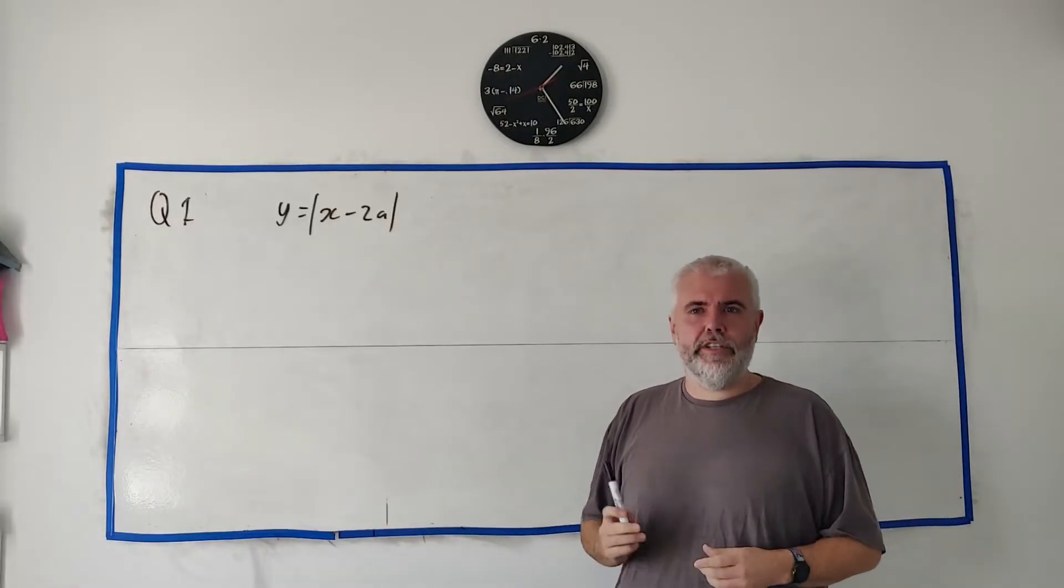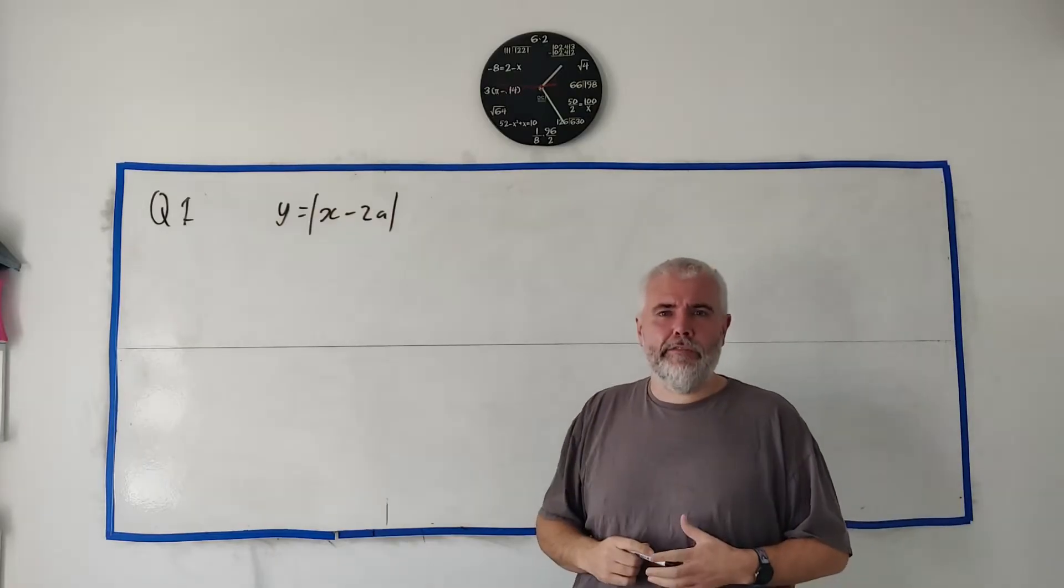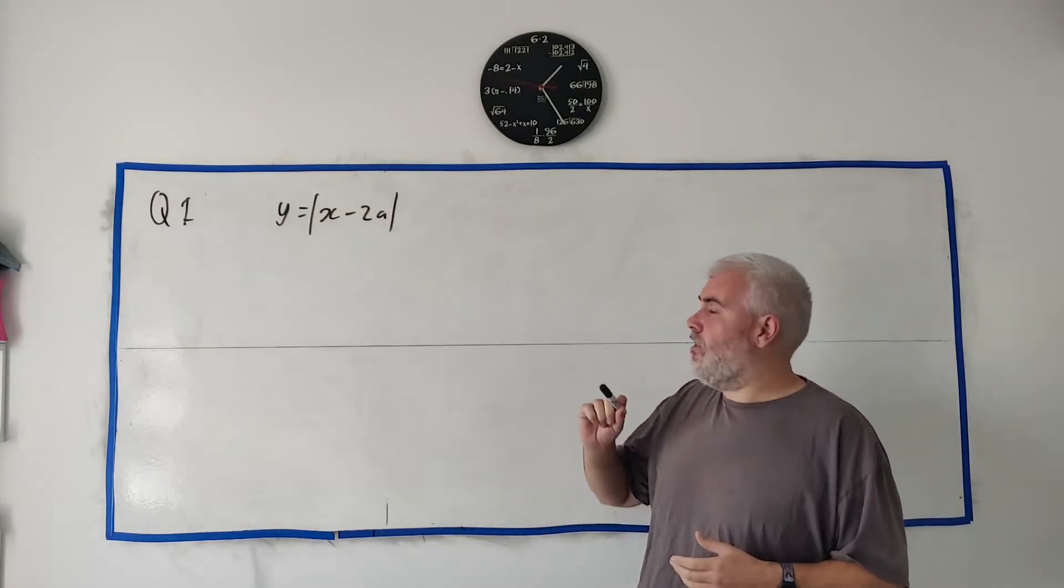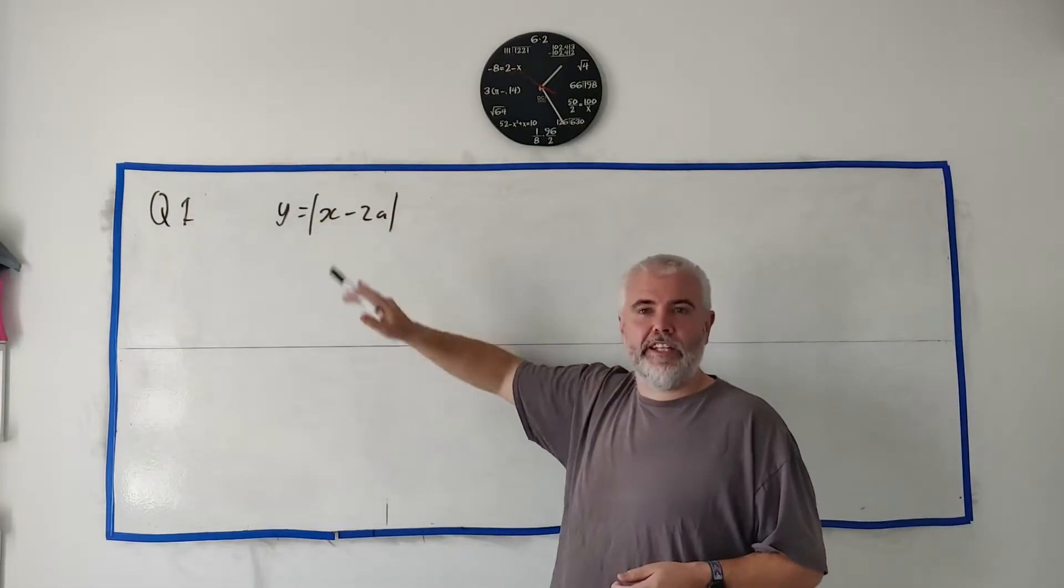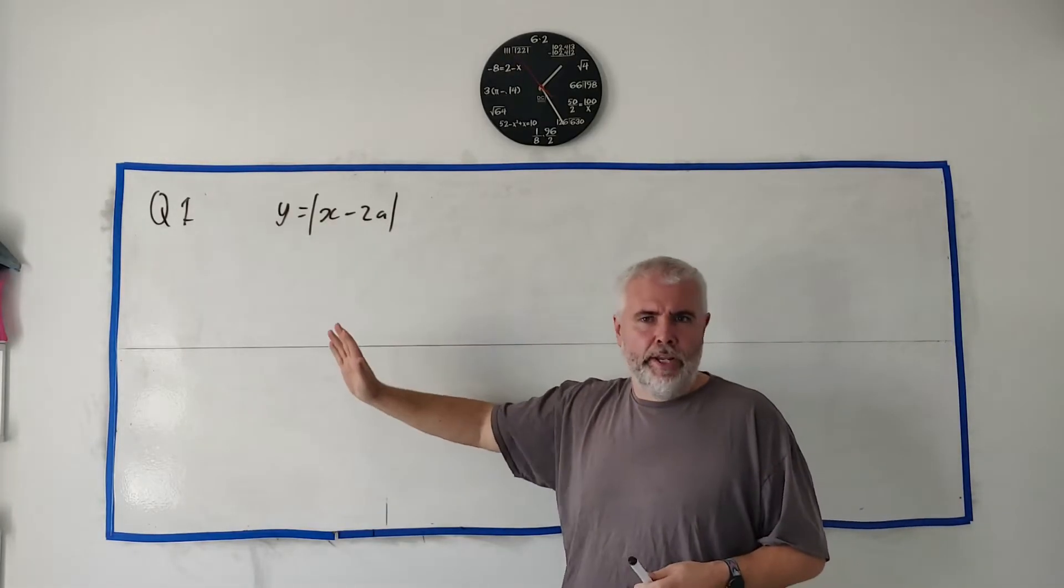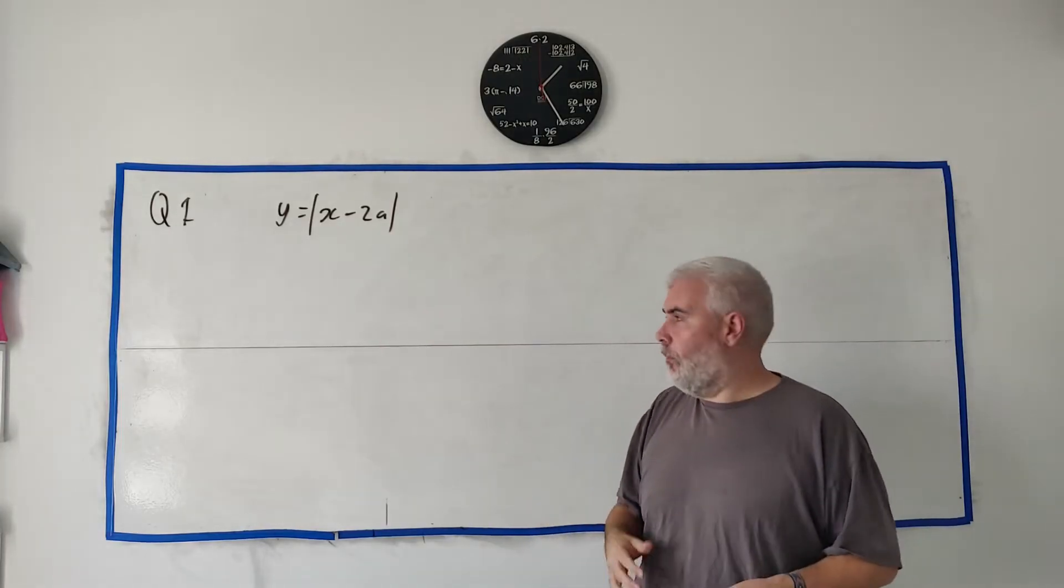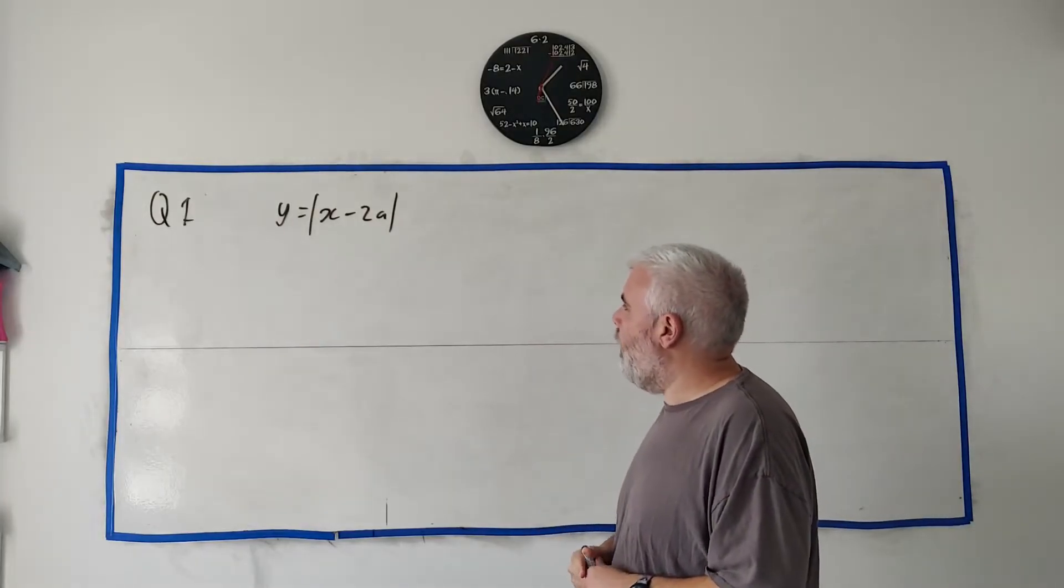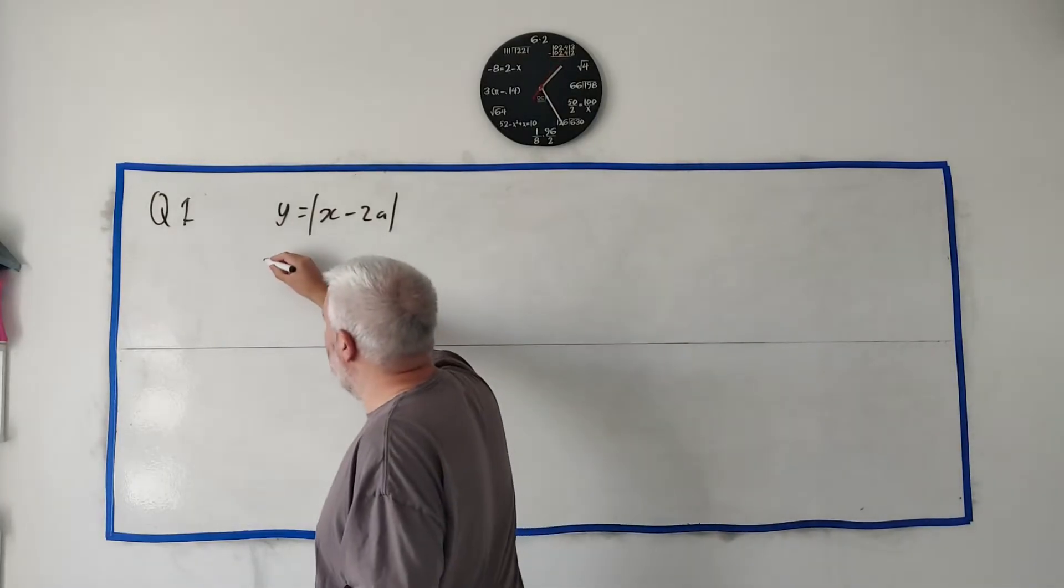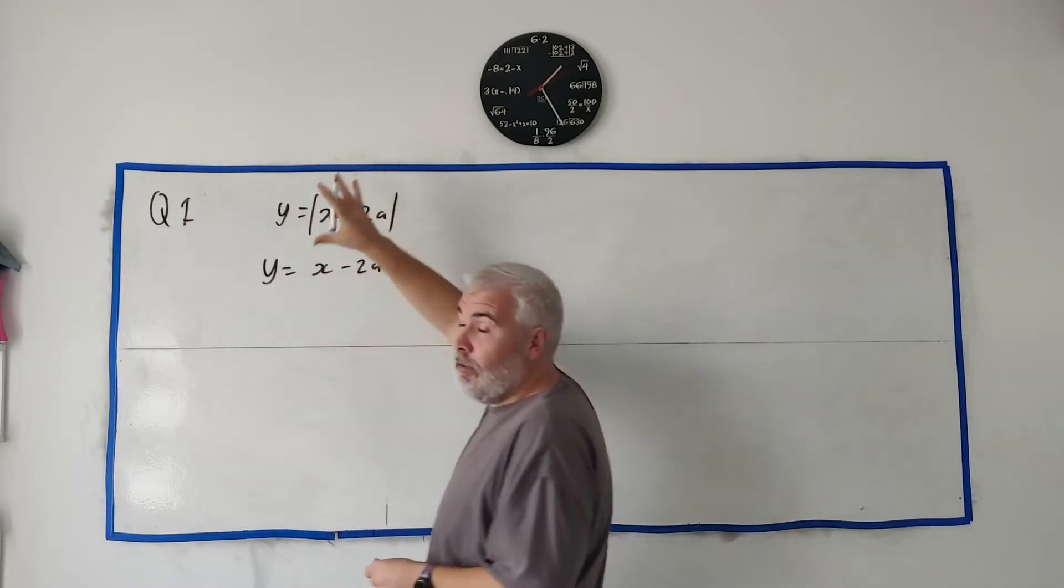Question 1 starts off with this short and simple question. We know it's short and simple because there's only one mark for it. They ask us to sketch the graph y equals the absolute value of x minus 2a. So I can just write this, we'll be finished in 30 seconds. But I do want to explain where it comes from because if you're watching this, you probably need a little more help.